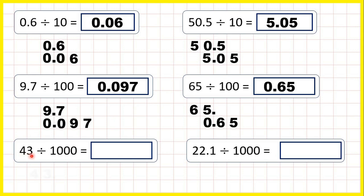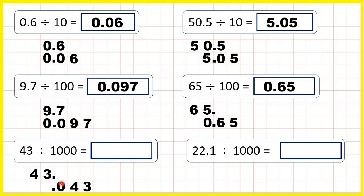Now we start with 43, and again, because we have a whole number, we can write the decimal point on the end. We copy down the decimal point, but this time we're dividing by a thousand. A thousand has three zeros, which means digits are going to move 3 squares. We're dividing, so digits move 3 squares to the right. If we copy this 3 down 3 squares to the right, and do the same with this 4, we now have empty squares before our decimal point. So we need to write 0 here, and we can never have an empty ones column, so we need to write 0 before the decimal point as well. So there's our answer: 0.043.